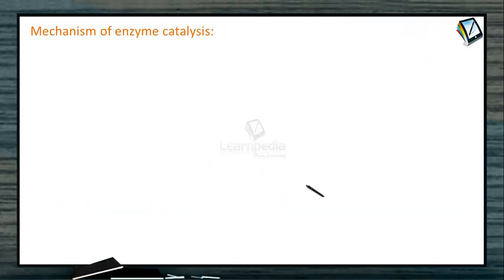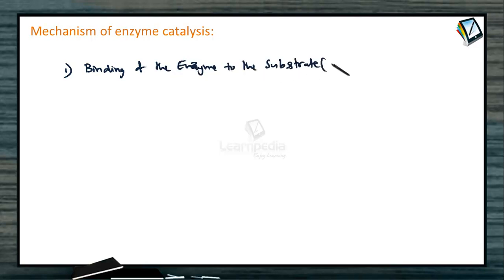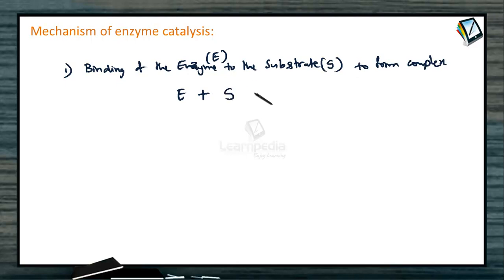Now coming to the mechanism of enzyme catalysis — how enzymes perform catalysis. The enzyme is involved in three steps. The first step is the binding of the enzyme to the substrate to form an intermediate complex. Here the substrate is indicated with S and the enzyme with E, and they react with each other to form the intermediate complex ES.